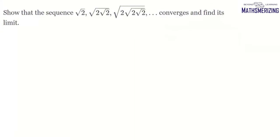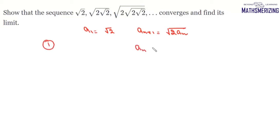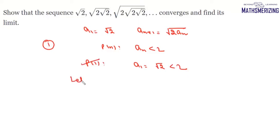Now for the second method using a recursive relation: a₁ = √2 and aₙ₊₁ = √(2·aₙ). First we prove the sequence is bounded, with the assertion Pₙ: aₙ < 2. For n = 1, a₁ = √2 < 2, so it is true for n = 1.